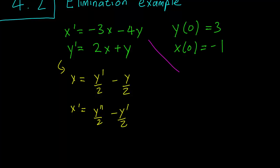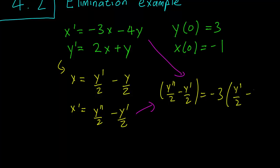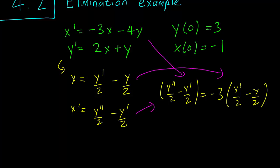Taking the first equation, we substitute in: y double prime over 2 minus y prime over 2, that's x prime, which equals negative 3 times y prime over 2 minus y over 2 — that comes from x — and we also have a minus 4y term.